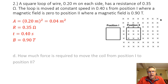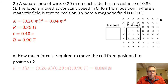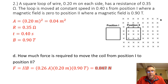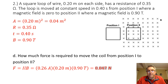Part D asks: how much force is required to move the coil from position 1 to position 2? The force equals the current times the length of the wire times the strength of the magnetic field: F equals ILB. The force is only applied to the side of the wire perpendicular to the magnetic field, which is one side of the square loop, so the length is 0.20 meters. With a current of 0.26 amps and a field of 0.90 tesla, the force is 0.047 newtons.